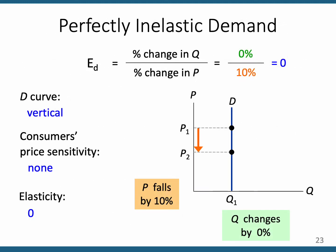The steepest a curve can be is perfectly vertical — that would be perfect inelasticity, meaning no matter what the price is, people are going to buy a certain amount. The product that comes closest is insulin. If you need insulin, you're going to buy about the same amount no matter how much the price changes.